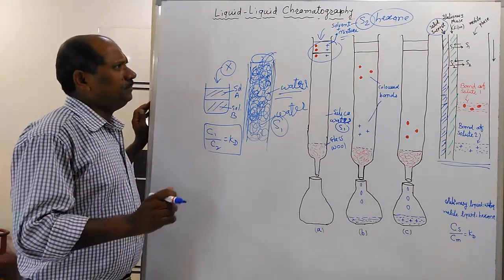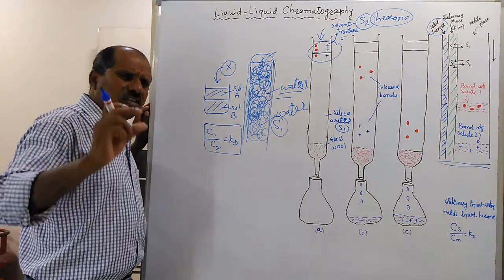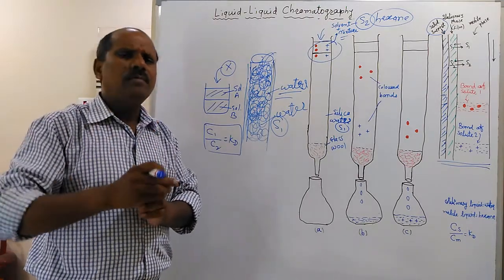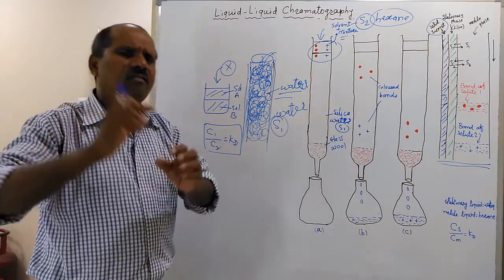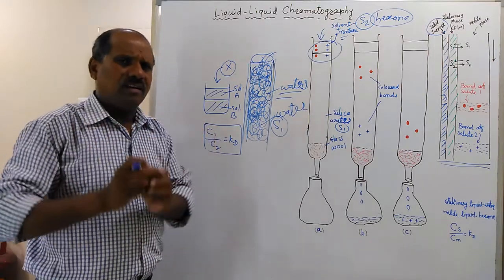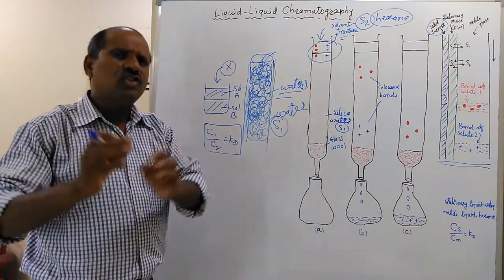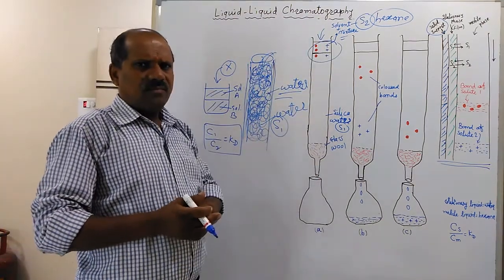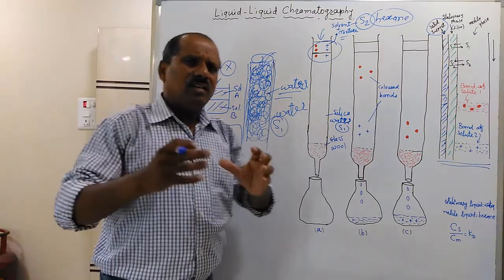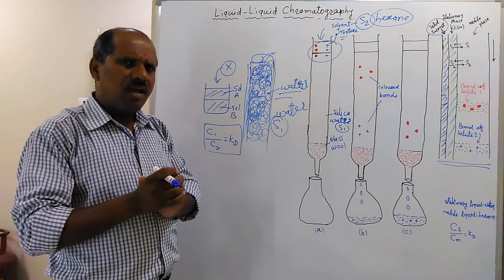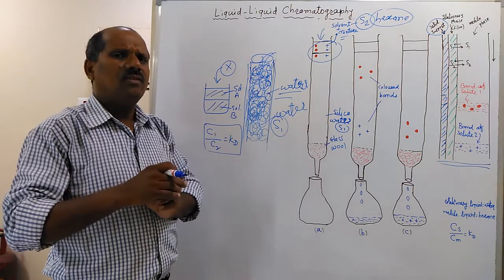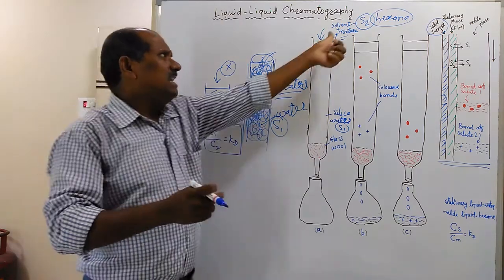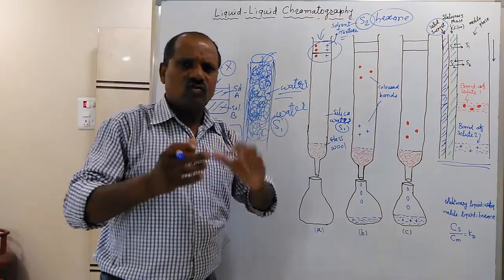Liquid-liquid chromatography is a technique used for the separation of two or more than two substances whenever they are in a mixture form and present in a small quantity. In such a case, we can separate the organic substances from that mixture by using this technique. In liquid-liquid chromatography, one glass tube is present that contains an inert material like silica soaked with solvent one, and solvent two and the mixture are applied from the top of the glass tube.